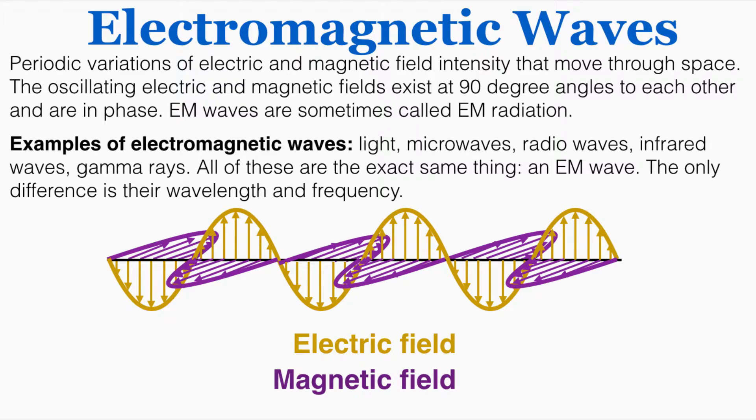You can see I have a picture here of an EM wave with the varying electric field indicated in yellow and the magnetic field in purple. So you can see that they are 90 degrees to each other and they're in phase. An extreme on the electric field happens at the same time as an extreme on the magnetic field.